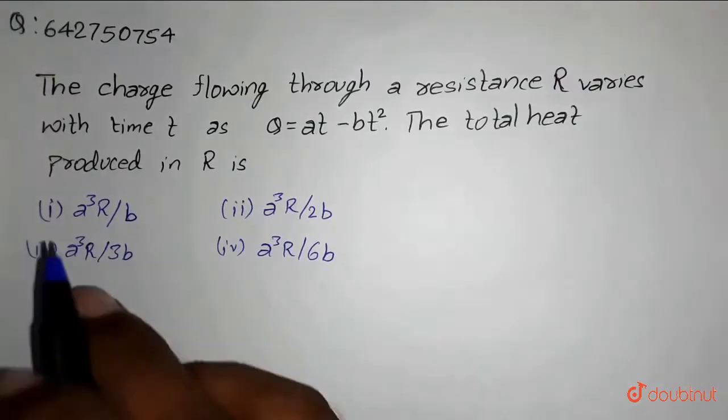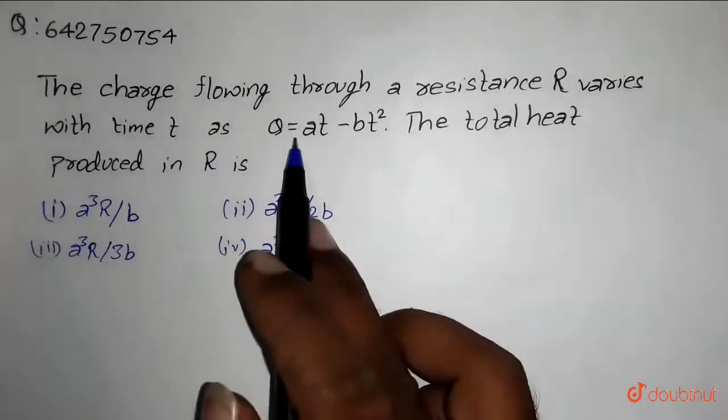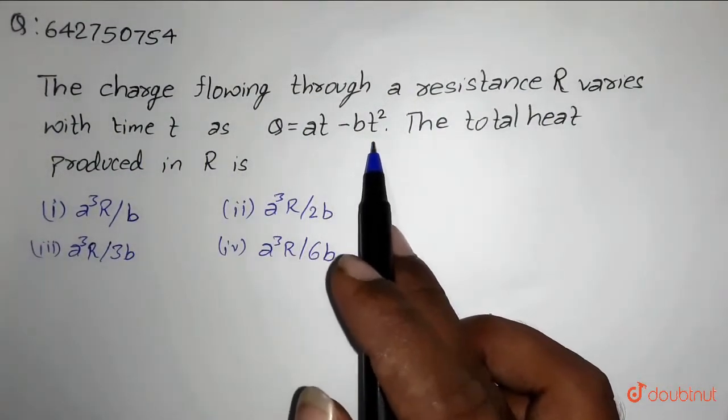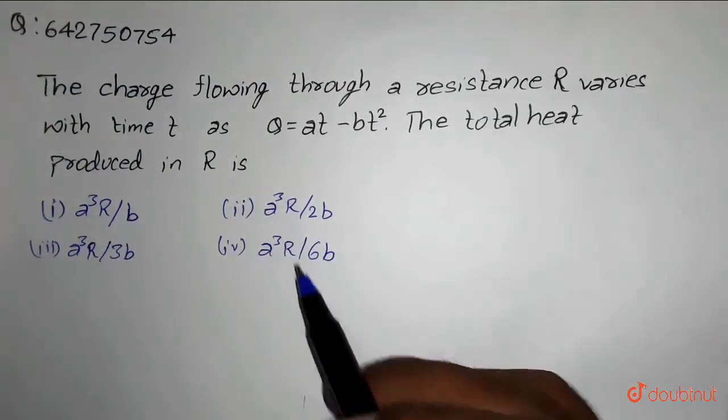Hello students. So here we have the question. The charge flowing through the resistance R varies with time t as q equals at minus bt square. The total heat produced in R is. So we need to find the total heat produced in R.